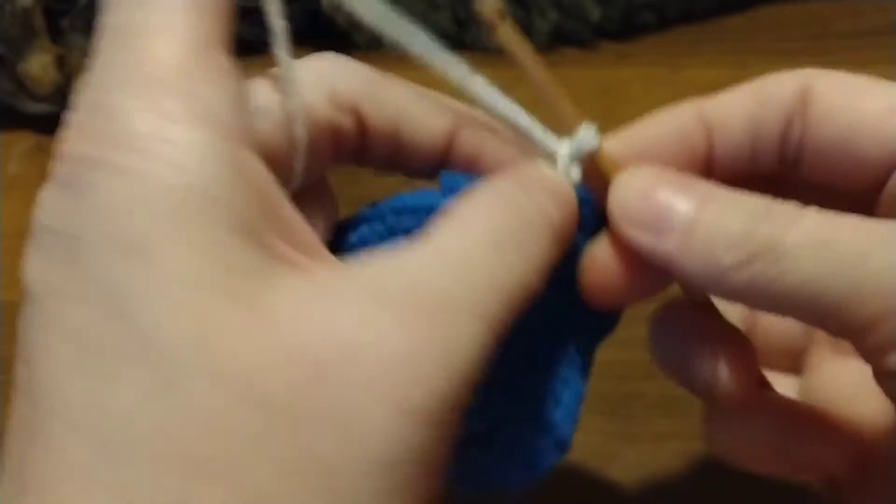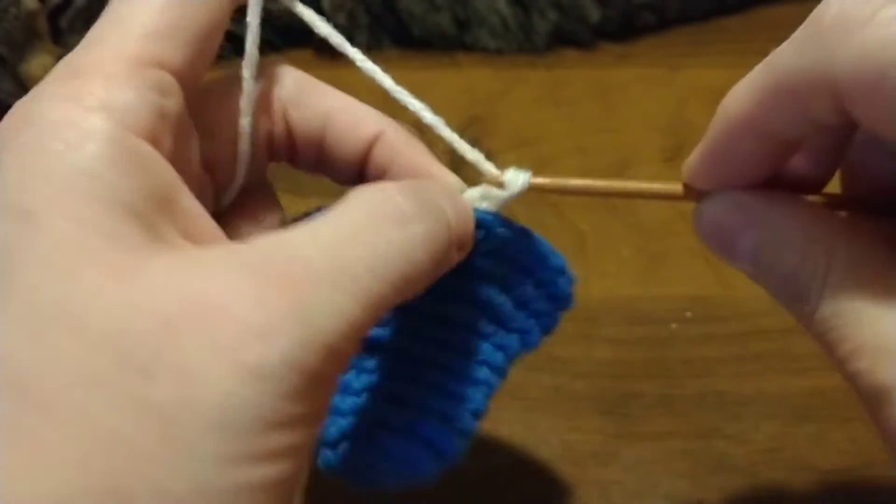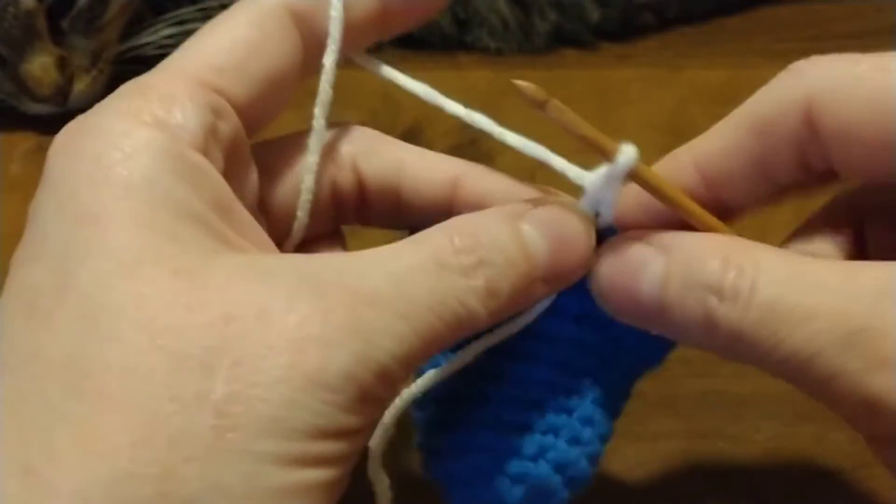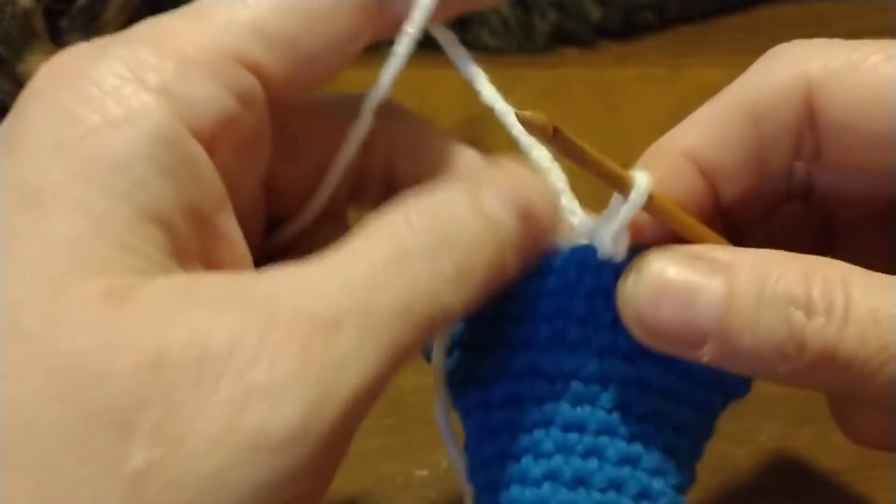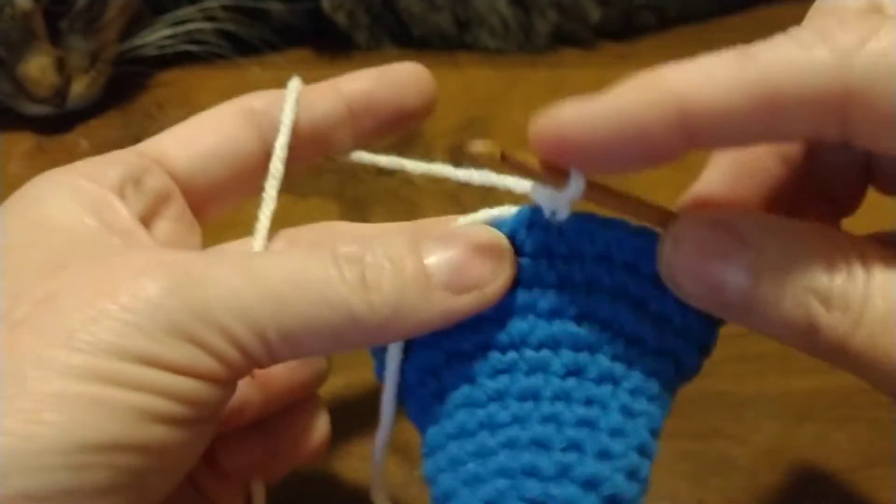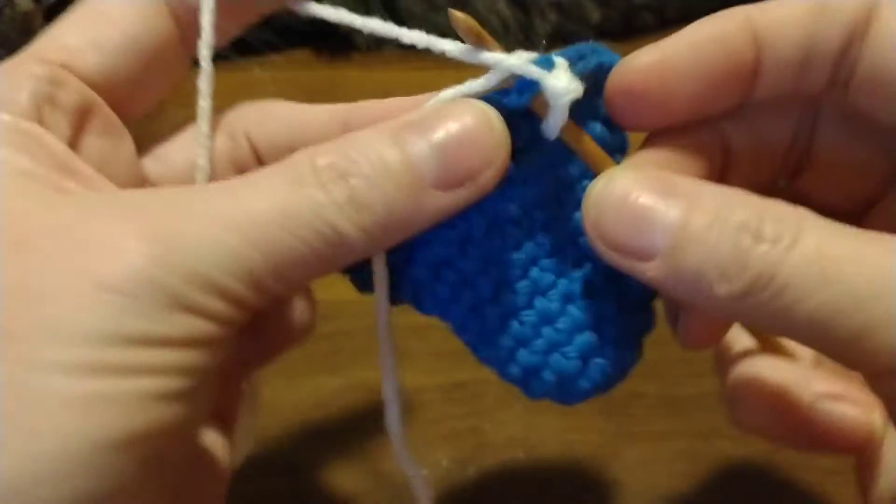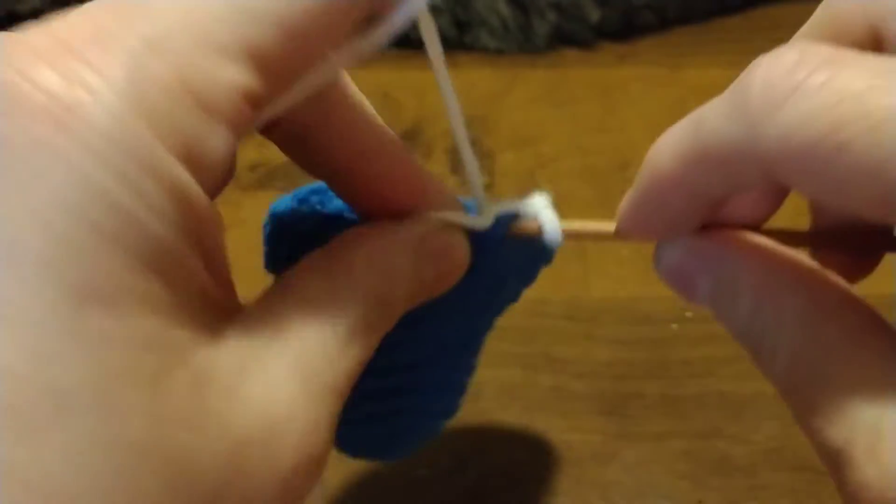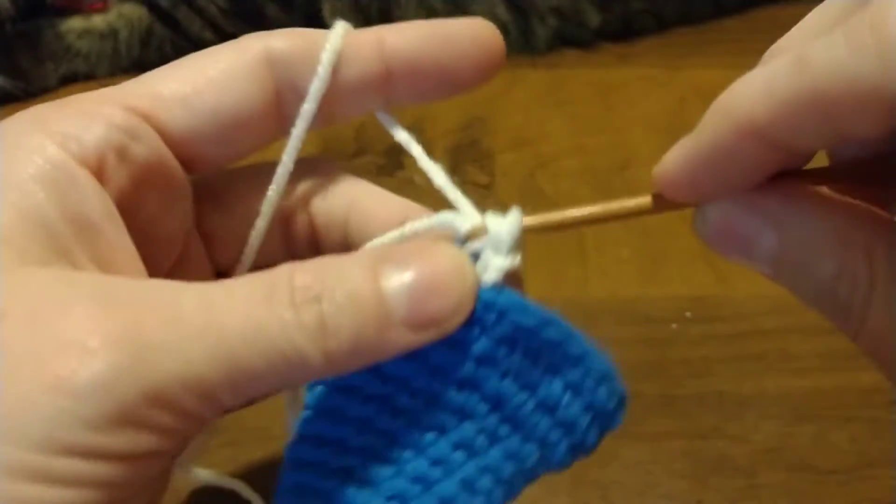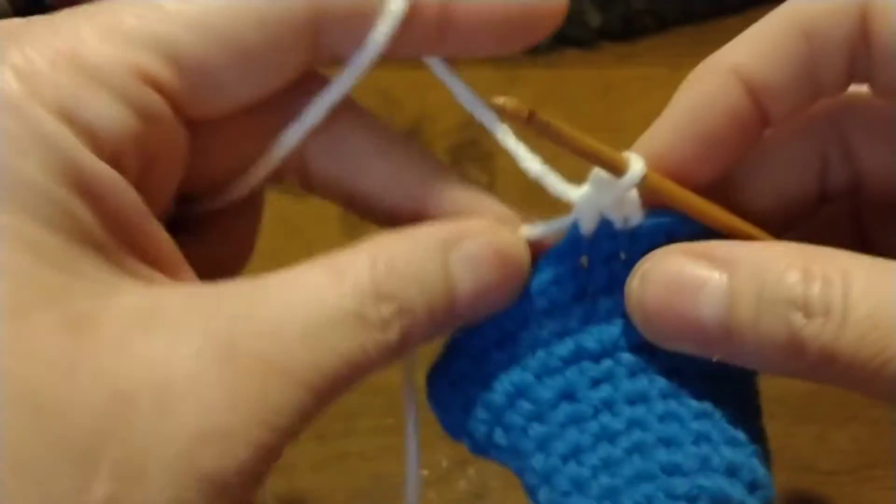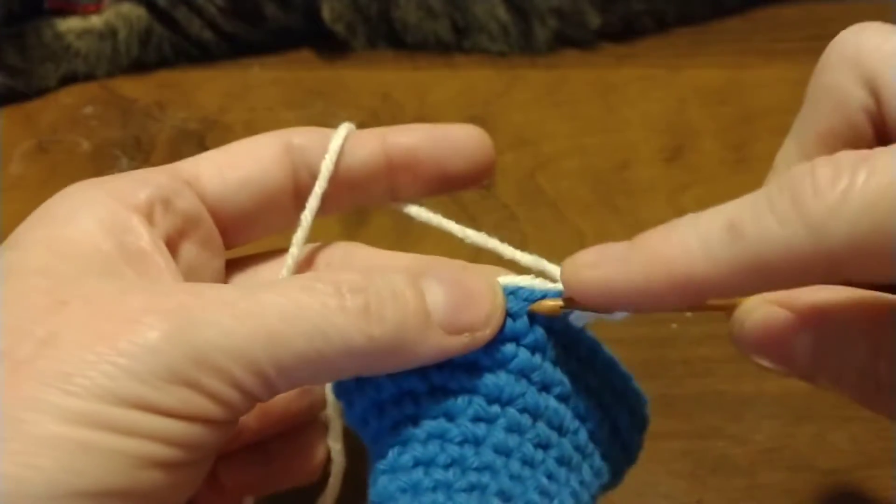And then I am going to do a row of single crochet, working the little tail in with the project. This way it hides the tail and you don't have to worry about weaving it in later.